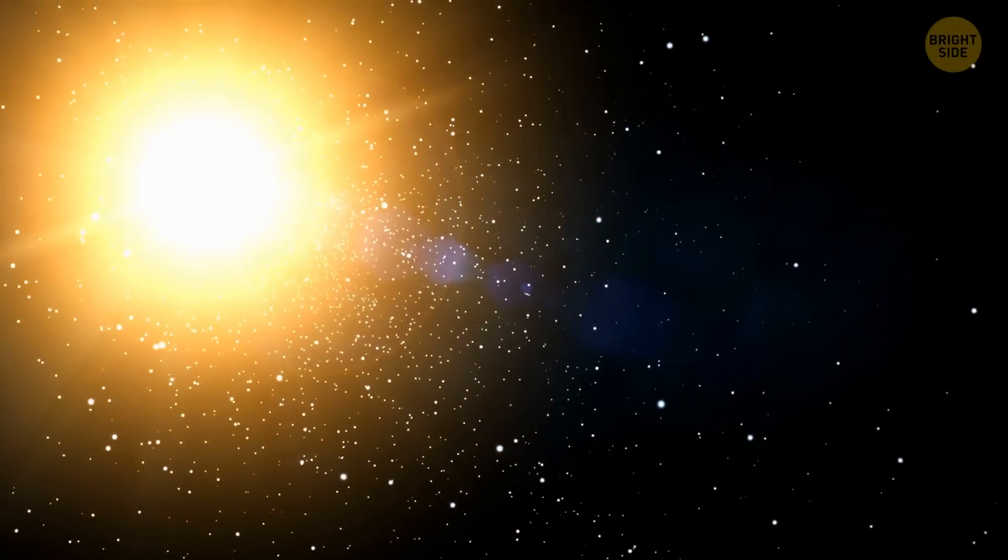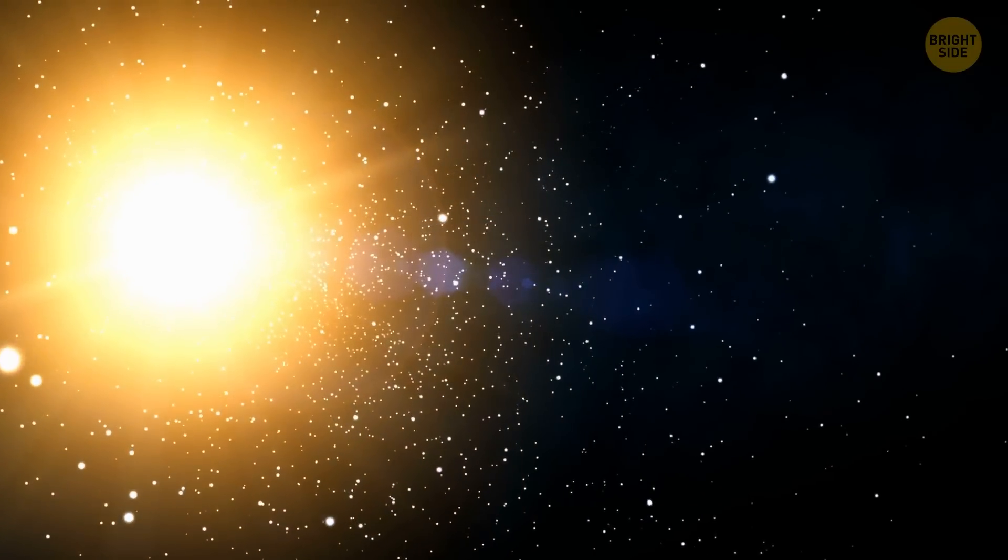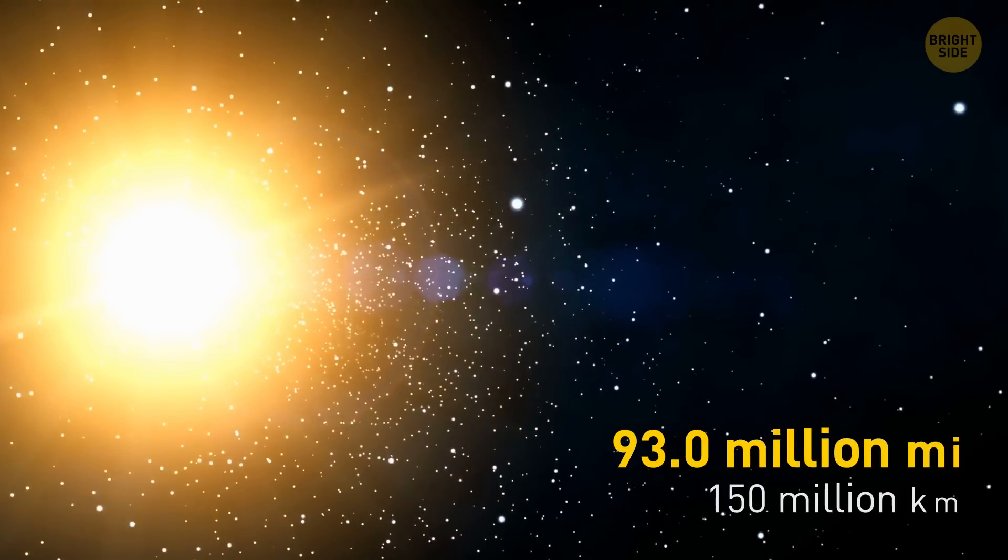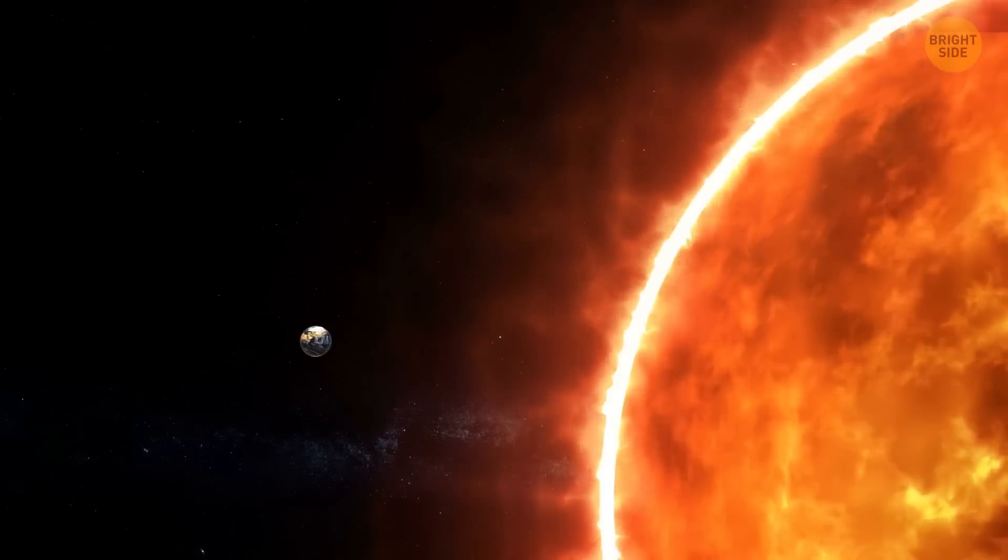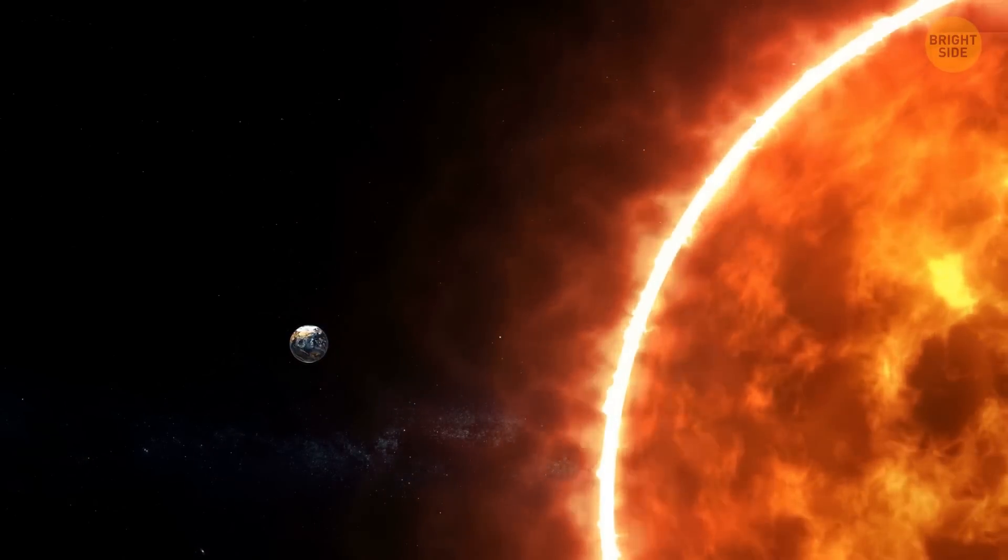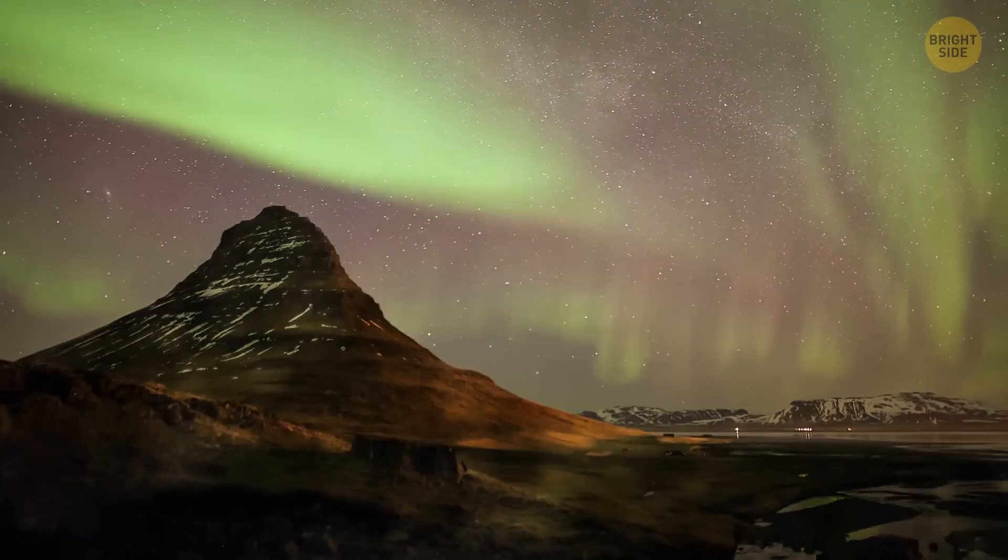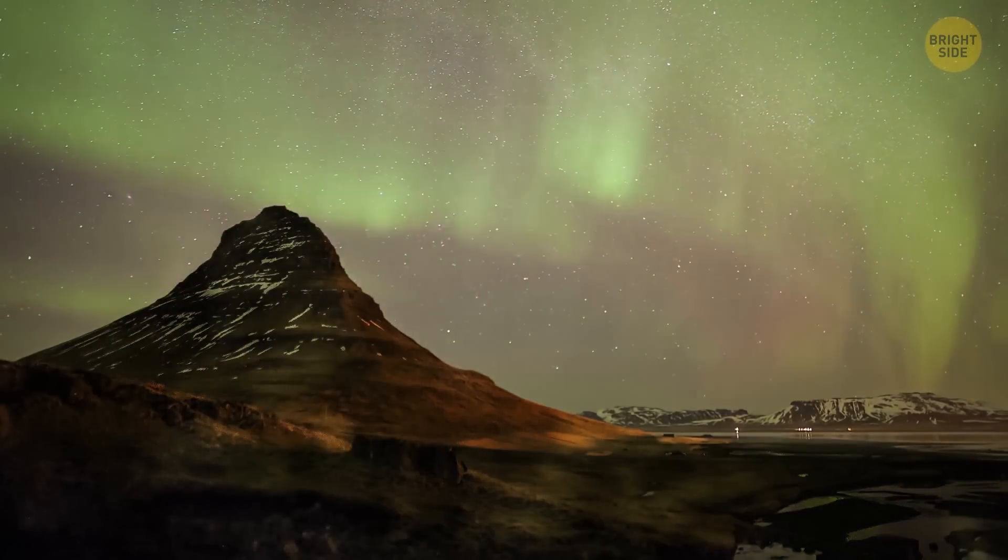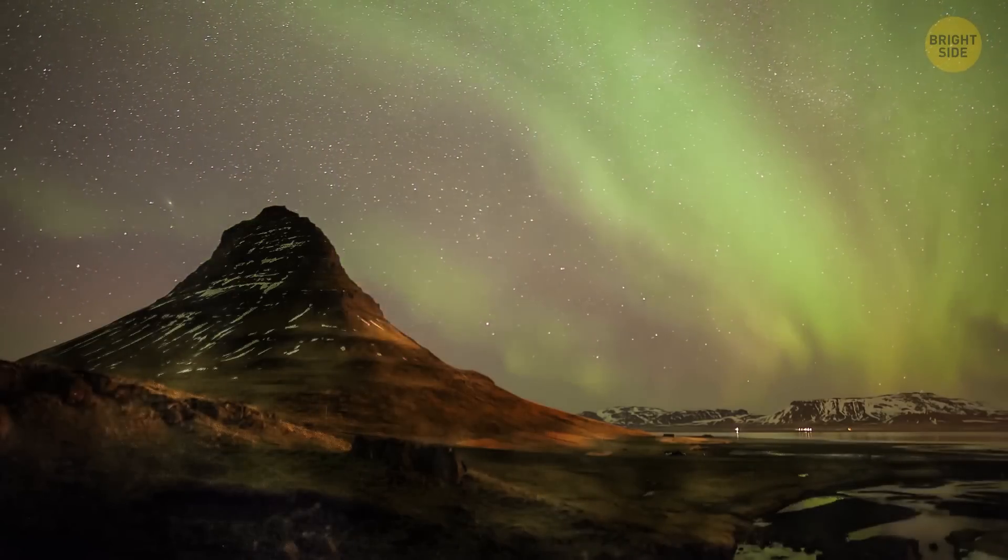We live inside the Sun. No, I don't mean that we're inhabitants of the red-hot ball of light approximately 93 million miles away. The thing is that the Sun's atmosphere stretches far beyond its visible surface, and our planet is right within its reach. In fact, it's the gusts of solar wind that create the breathtaking phenomenon known as the northern and southern lights.